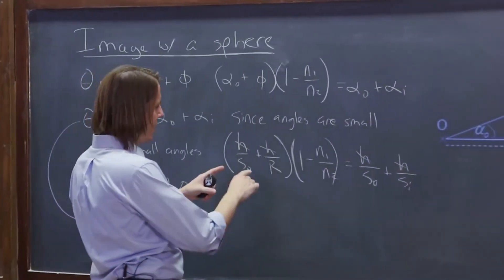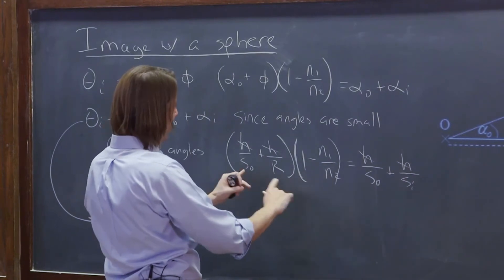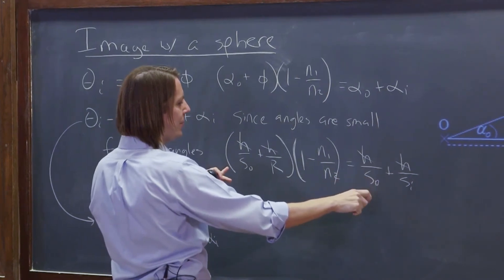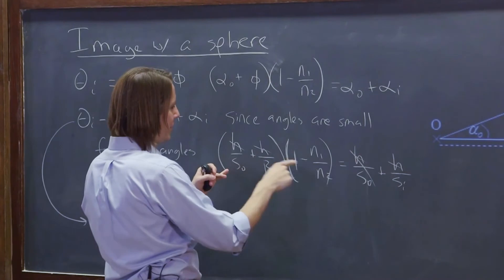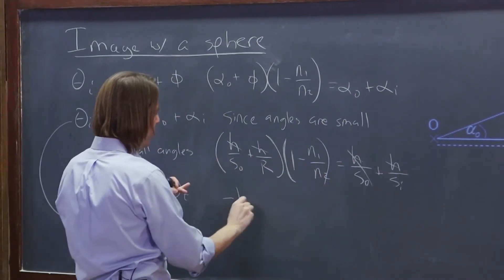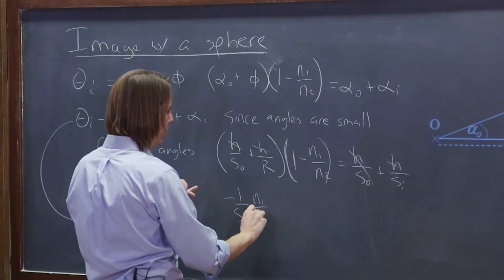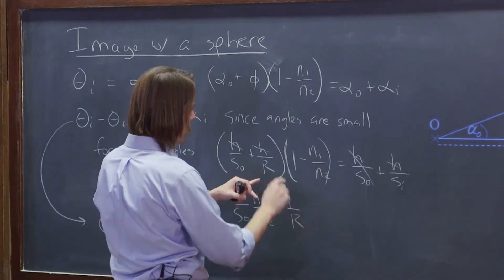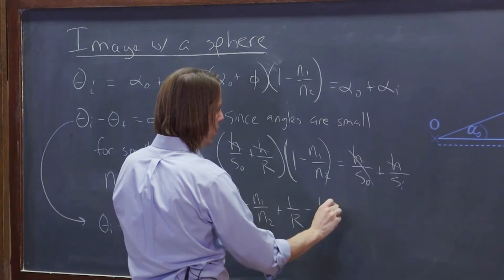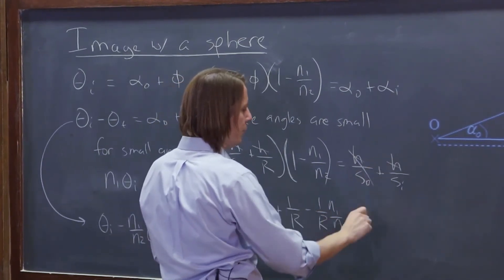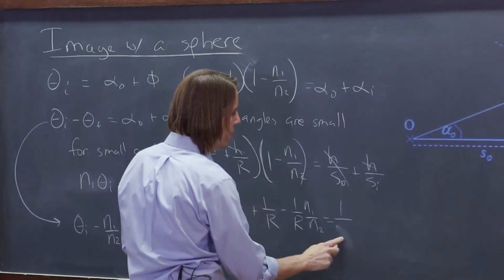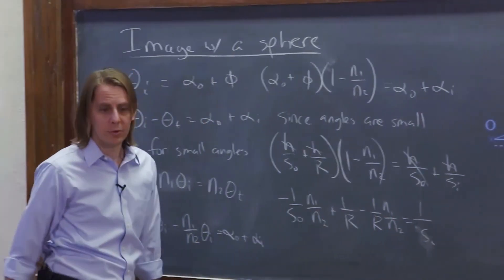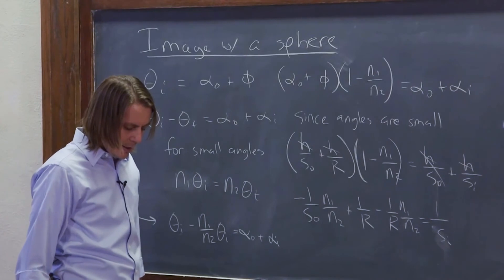And then you realize we have to multiply this thing out, right, foil that. Well, the first term, 1 over S naught times 1, that's just 1 over S naught. And we have a 1 over S naught over here. So that goes away and that times that goes away. So let's see. What's left is minus 1 over S naught times N1 over N2. We still have to have that term, plus 1 over R times N2 minus N1 over R times N1 over N2. And that equals 1 over SI. So we got rid of that one with that one. So three terms left here. One term over there.